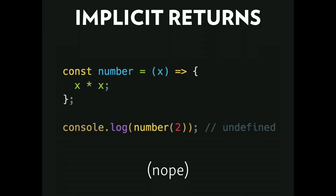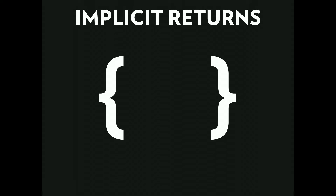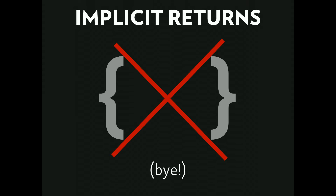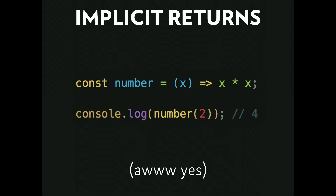Implicit returns: if I have a function that multiplies a number by itself but doesn't return anything, I'll get undefined. How do you use an implicit return? Just remove the curly brackets. Once you eliminate those curly brackets, it implicitly returns — you don't have to type return. It's a cool little shortcut.